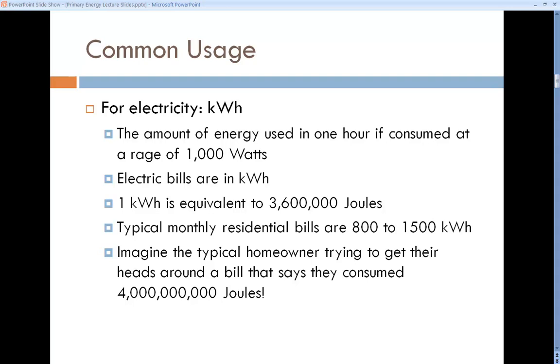The kilowatt-hour is equivalent to 3,600,000 joules. A typical monthly residential electric bill might be between 800 and 1,500 kilowatt-hours. That would mean using billions of joules, gigajoules of electricity. That would be hard to get our hands around, so we don't do that.